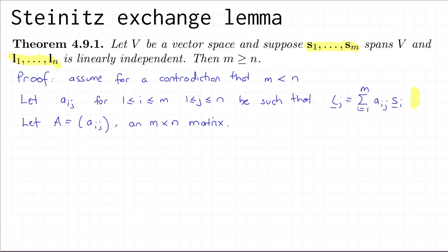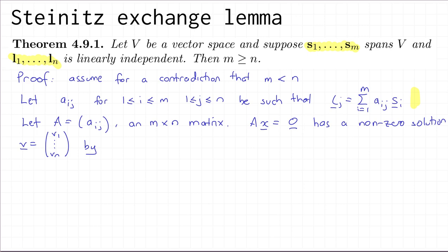What can we say about the matrix equation Ax = 0? Remember that m is less than n, so the matrix has strictly more columns than it does rows. The answer is that this equation has a non-zero solution — we'll call that solution v, with entries v_1 down to v_n. This is because we have more variables than equations, and we proved that such a linear system has a non-zero solution in Corollary 3.11.2.